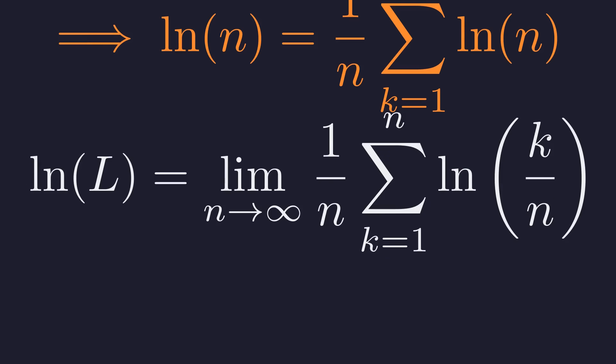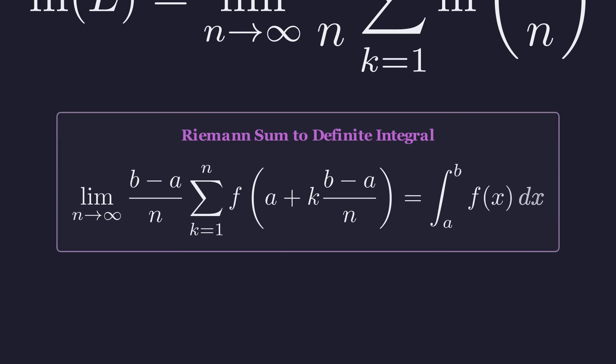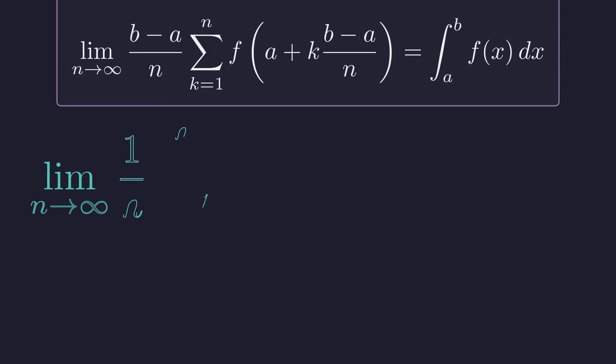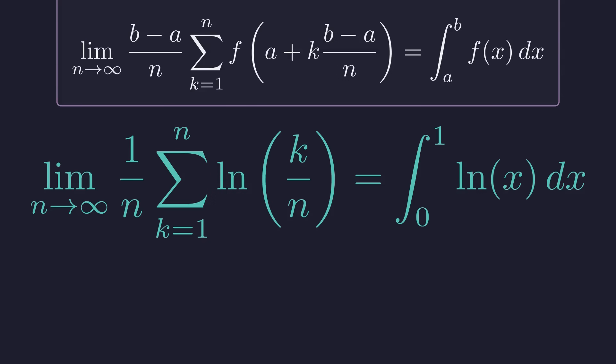This is the precise definition of a definite integral as the limit of a Riemann sum. A Riemann sum approximates the area under a curve. As the number of rectangles, n, approaches infinity, this sum becomes the exact area, which is the definite integral. In our case, the interval is from 0 to 1. In our expression, the function is the natural log of x and the interval is from 0 to 1. So our limit equals this definite integral.